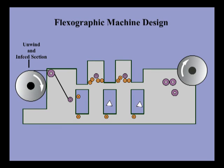Flexo presses generally have four basic sections. The first section is called the unwind and infeed section. The tension of the roll must be controlled to prevent slack and wrinkles as the paper unwinds into the press.